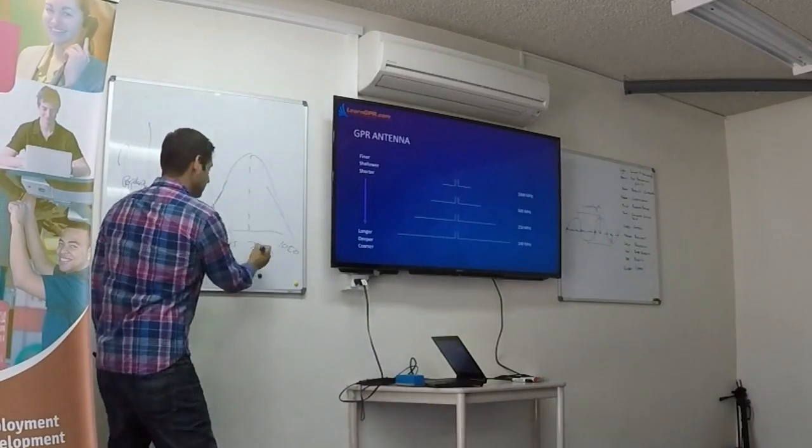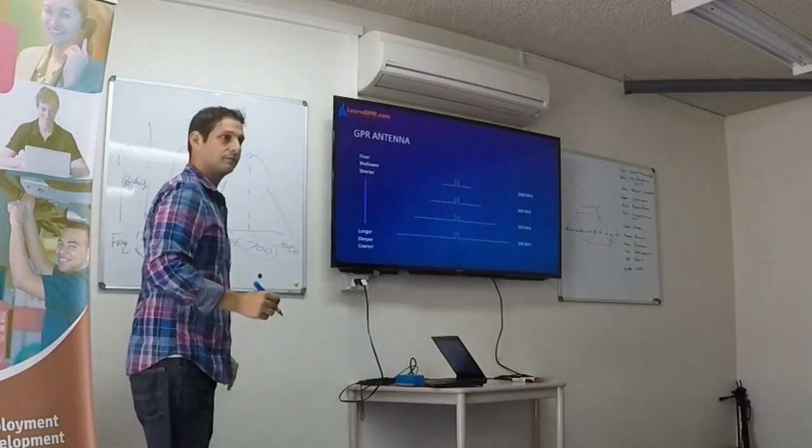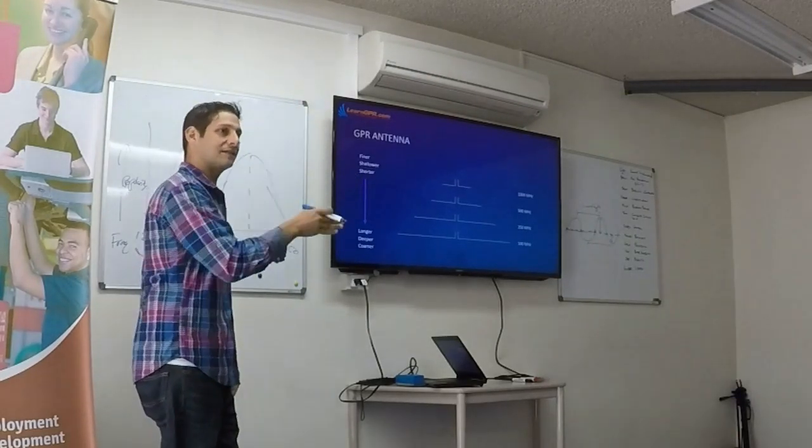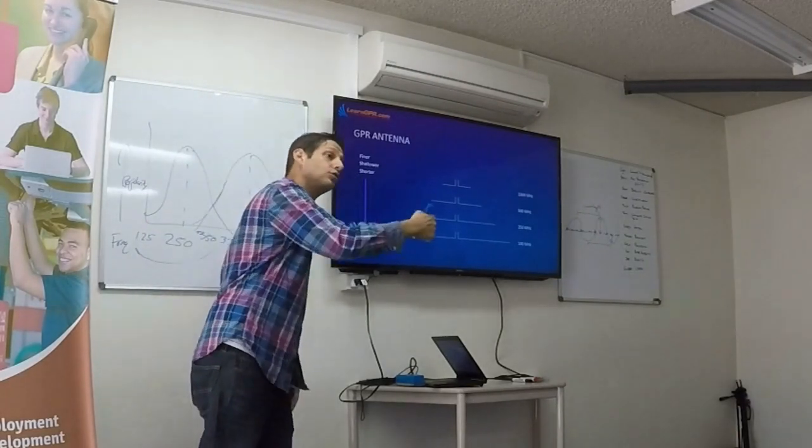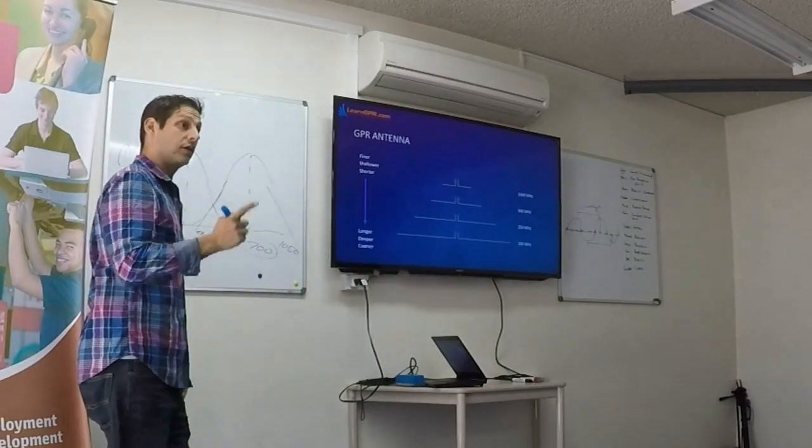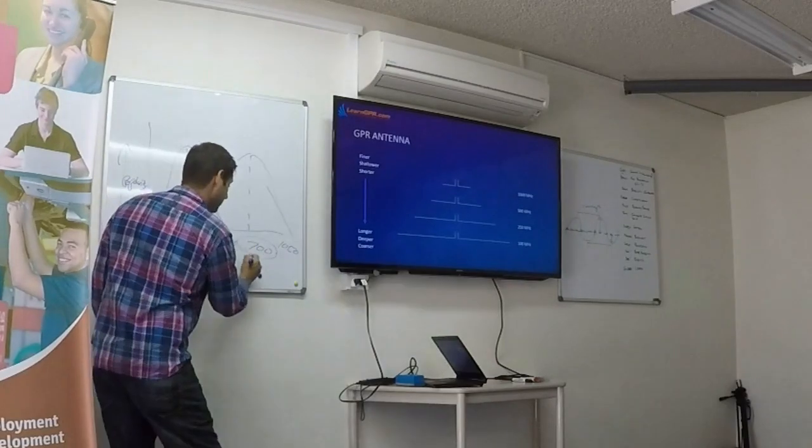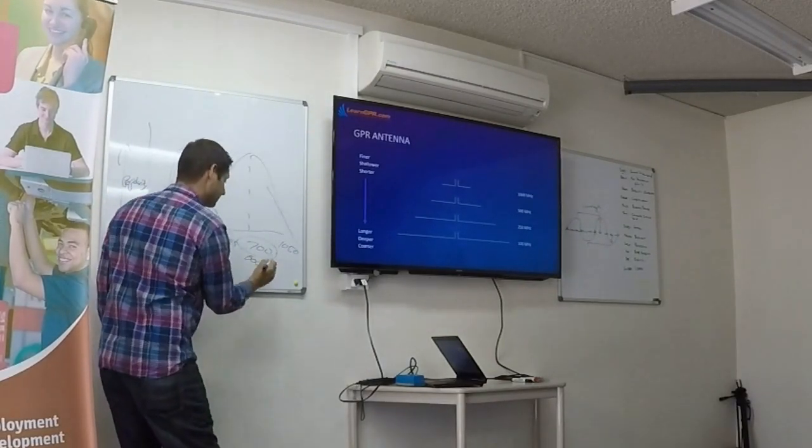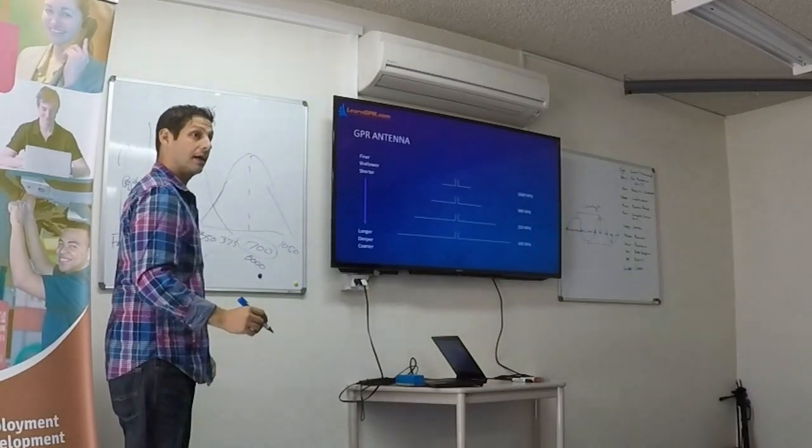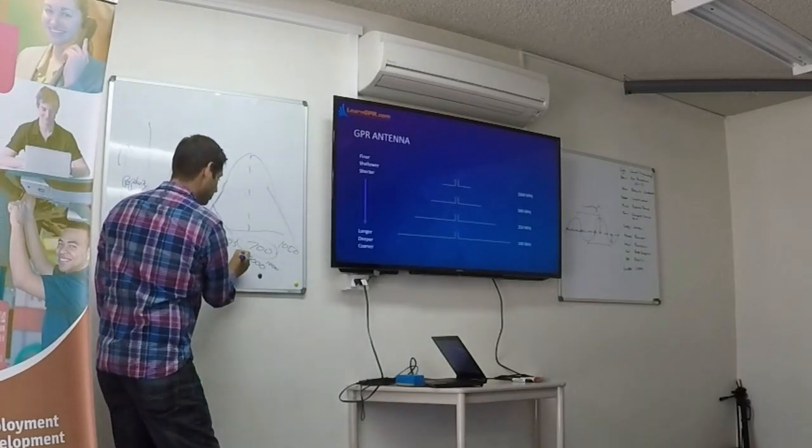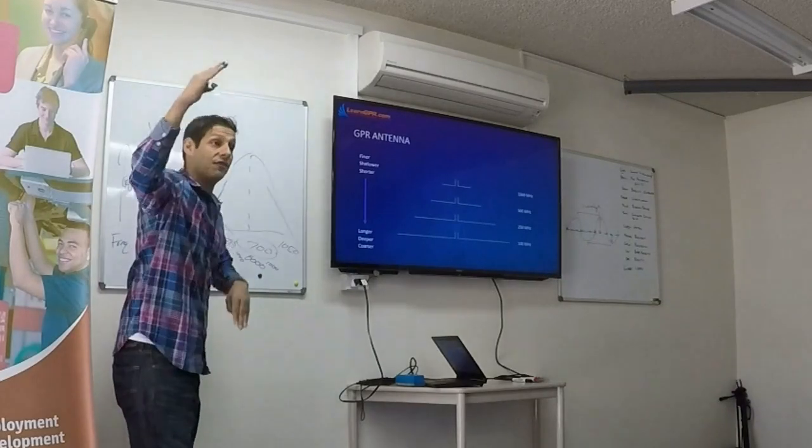They take this antenna that they just made. They pulse it 10,000 times. How many times of that 10,000 did it actually produce a 700 megahertz frequency? I don't know. Let's say 6,000. How many times did it produce an 800? I don't know, maybe 1,000. And what about a 600? Maybe 1,000 times out of that 10,000.